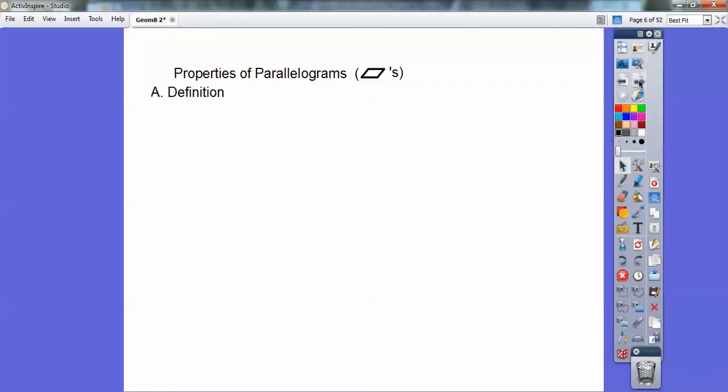Properties of parallelograms. Let me start off with the definition of a parallelogram. A parallelogram is a quadrilateral where both pairs of opposite sides are parallel. So here's an example right here. Both pairs of opposite sides are parallel. The arrows mean that they're parallel, so these arrows mean that these opposite sides are parallel, and the two arrows on each side mean that those two sides are parallel as well.